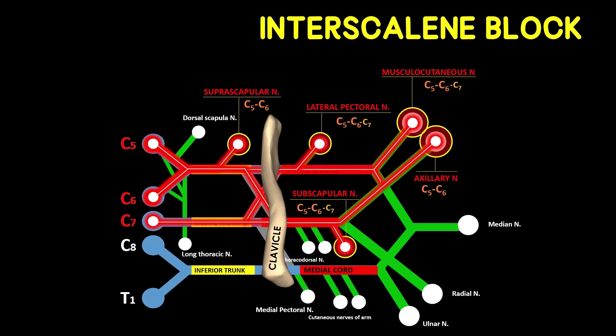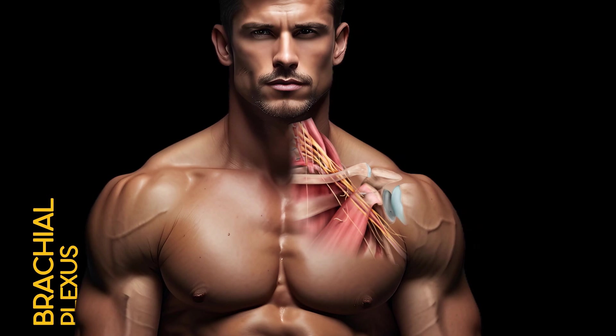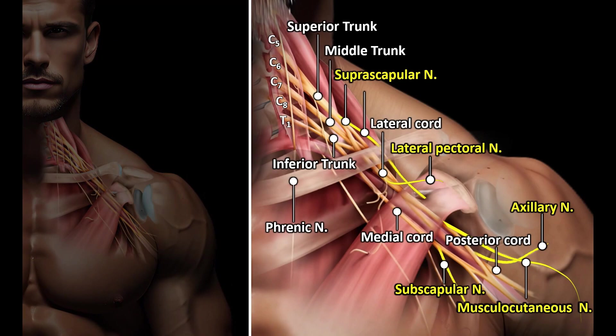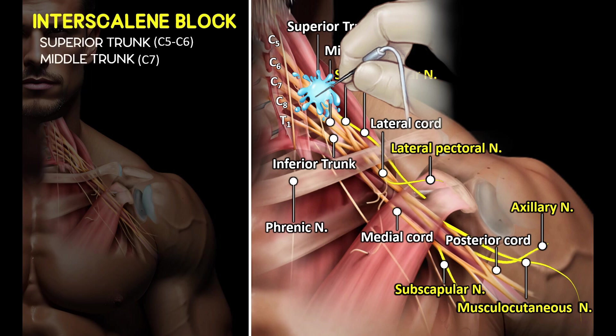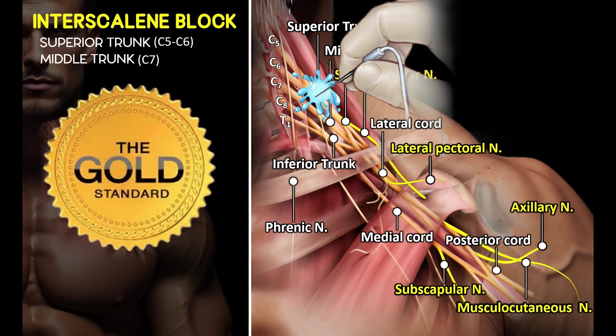In an anatomical analysis, the principal nerves governing the innervation of the shoulder joint emanate from the brachial plexus, exerting pivotal functions in furnishing both sensory and motor innervation to the shoulder joint. The notable nerves encompass the suprascapular nerve, axillary nerve, subscapular nerves, lateral pectoral nerve, and musculocutaneous nerve. Performing any approach above the clavicle — supraclavicular approaches — results in a simultaneous block of all branches involved in shoulder innervation. Specifically with the interscalene approach to the brachial plexus, an anesthetic and analgesic block of all these branches is achieved.